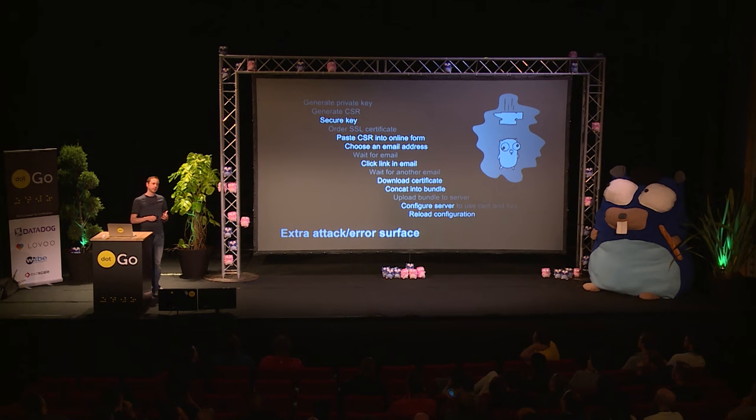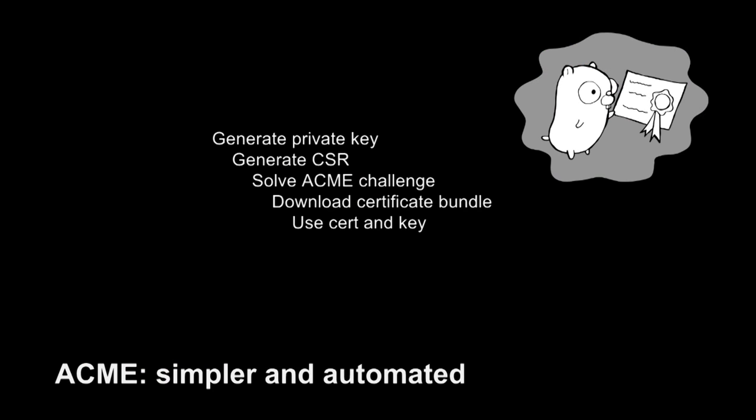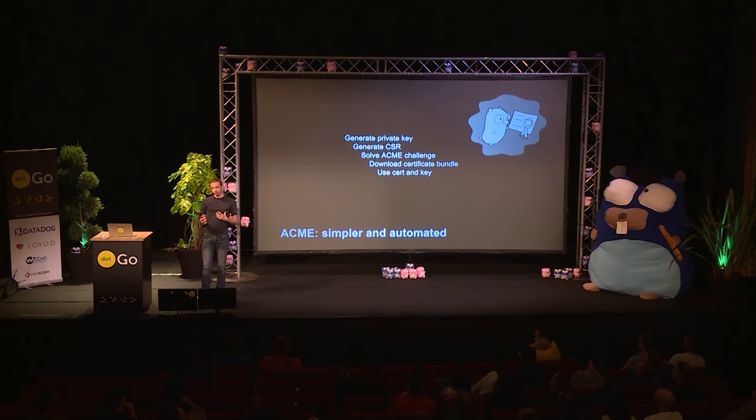The ACME protocol, if implemented by certificate authorities, allows us to throw out all of these steps and swap them out for a new process that is vastly simplified and much safer. Here we have steps where the first two and the last two in the process are quite easy. And if you use this protocol, you can be this happy little gopher with their certificate. The middle step is what I should talk about for a few minutes so that you understand what's going on and can use it in your Go programs.